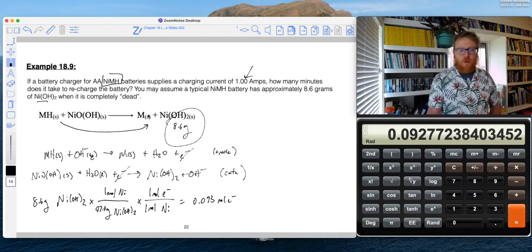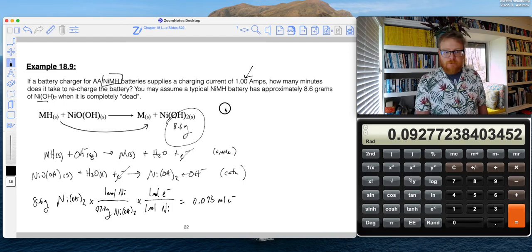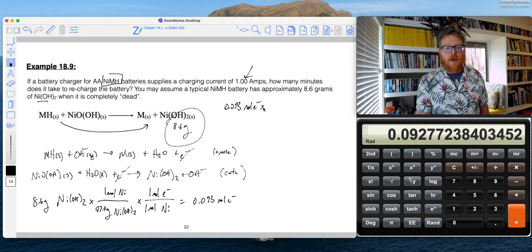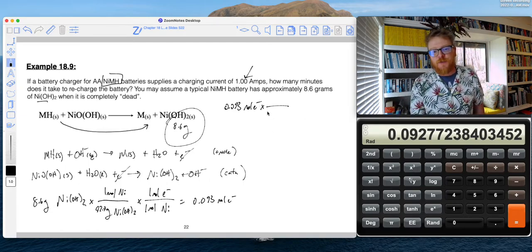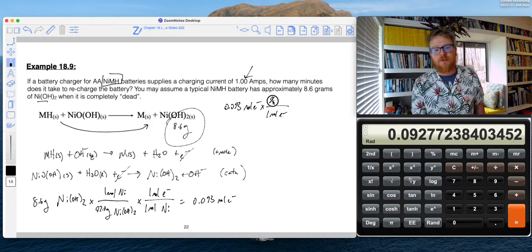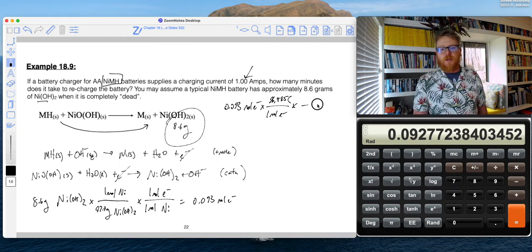And so from there, if I want to figure out how long will it take to charge the battery if it's completely dead, so we need 0.093 mole of electron. So we'll start with that number. And you might have guessed we're going to use Faraday's constant, because Faraday's constant says in one mole of electrons there's 96,485 coulomb.